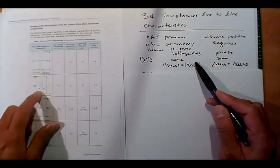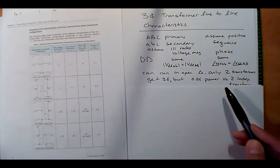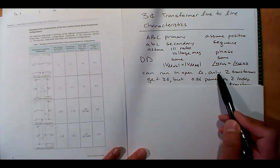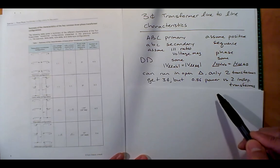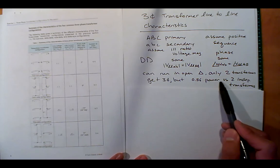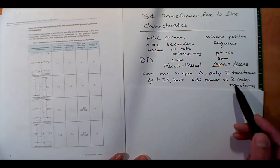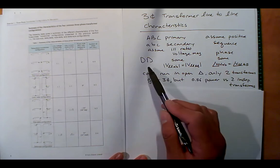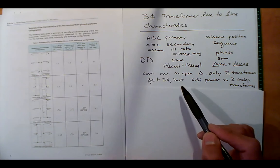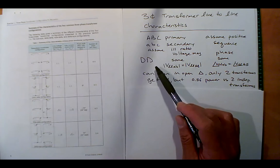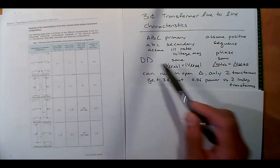A delta looks like chasing the tail, while a Y looks like a star. One nice thing about delta-delta is that you can run it in open delta — if you lose a phase, you still get robustness. You actually get only 86% of the power versus two full transformers, but you still get three-phase. I believe some ships run delta-delta for that reason, so you can still operate even if a phase goes down. You can pull out a phase, repair or maintain it, and bring it back in.